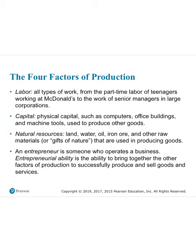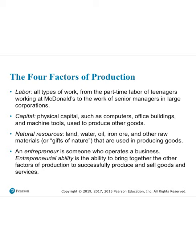The four factors of production are labor, capital, natural resources, and entrepreneurial ability. Labor is any type of work, supplied by households. Capital here means physical capital — computers, office buildings, machinery, and tools used to produce goods or services. Natural resources include land, water, oil, iron, and other raw materials. Entrepreneurial ability is the idea-generation that brings together the other three factors to produce goods and services.